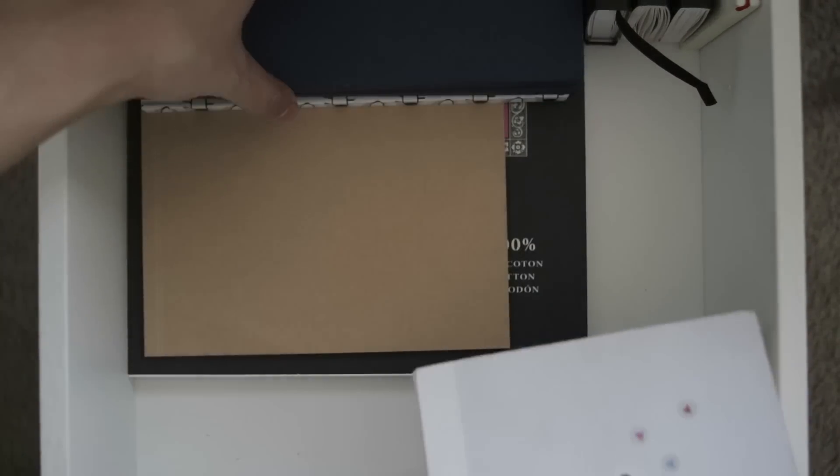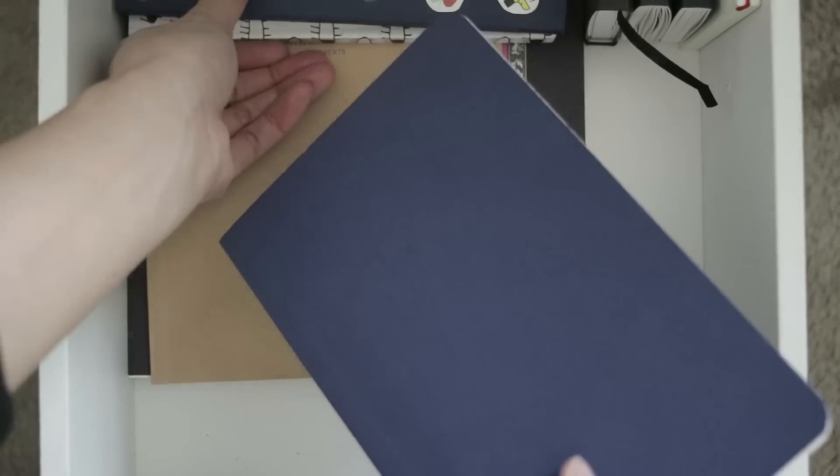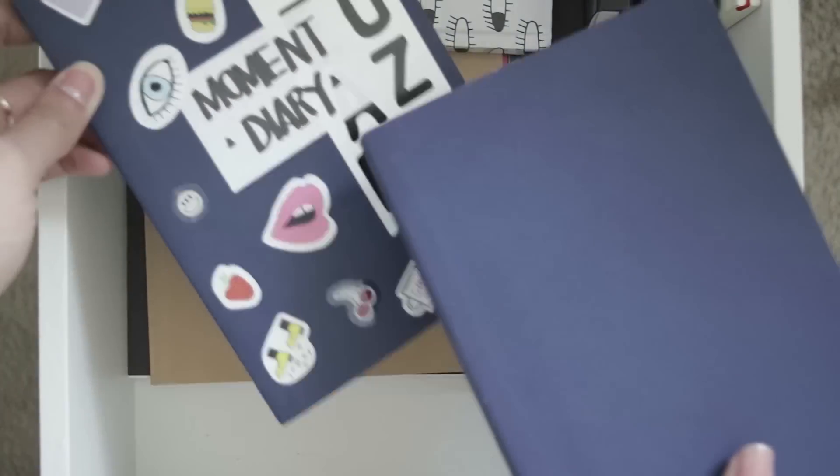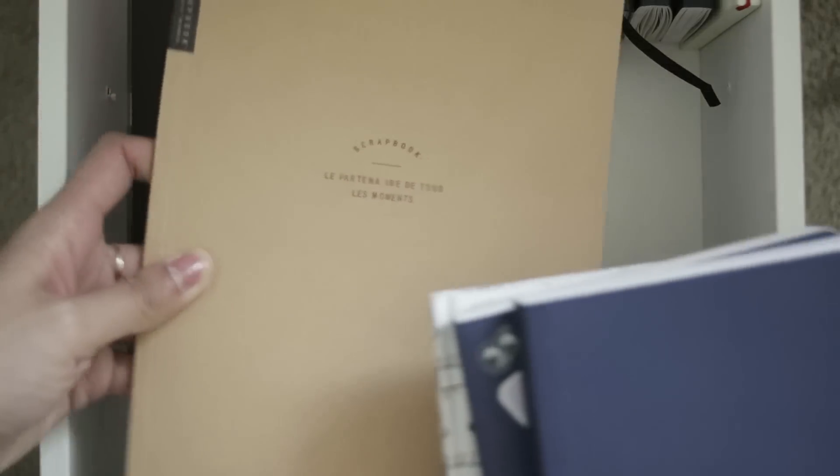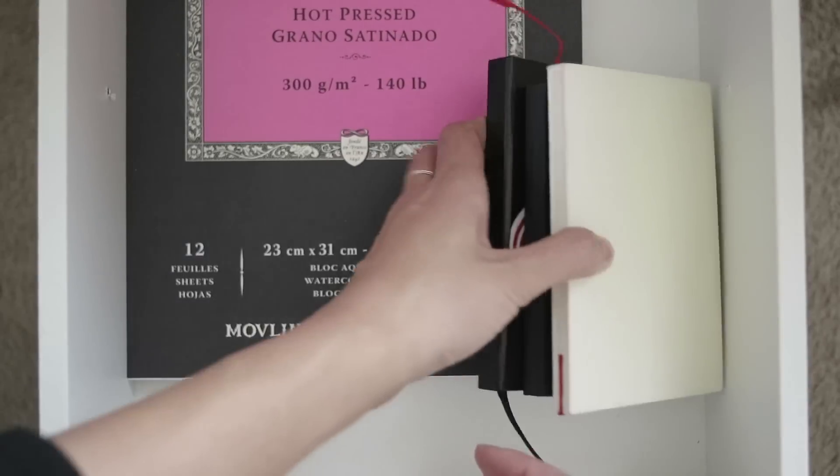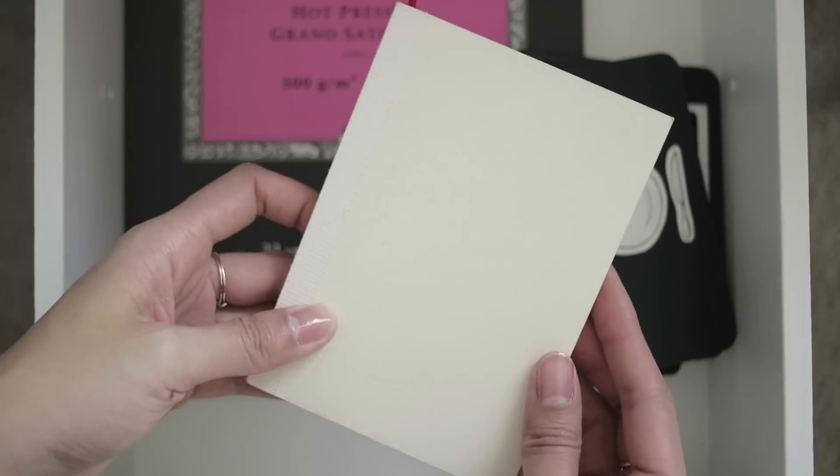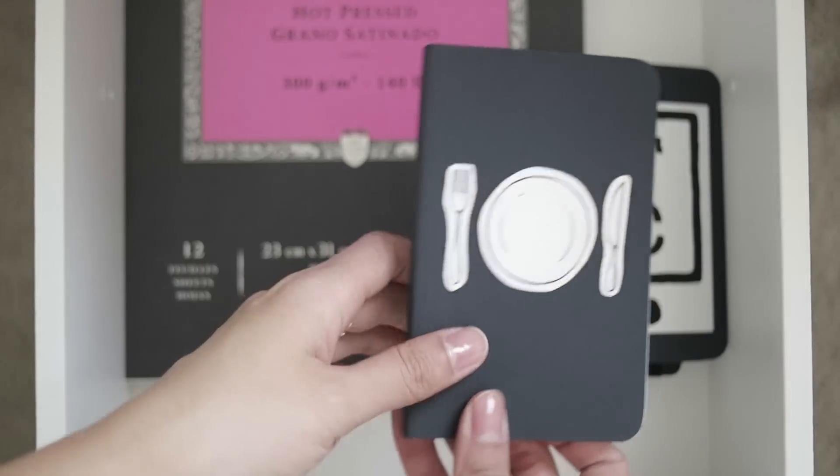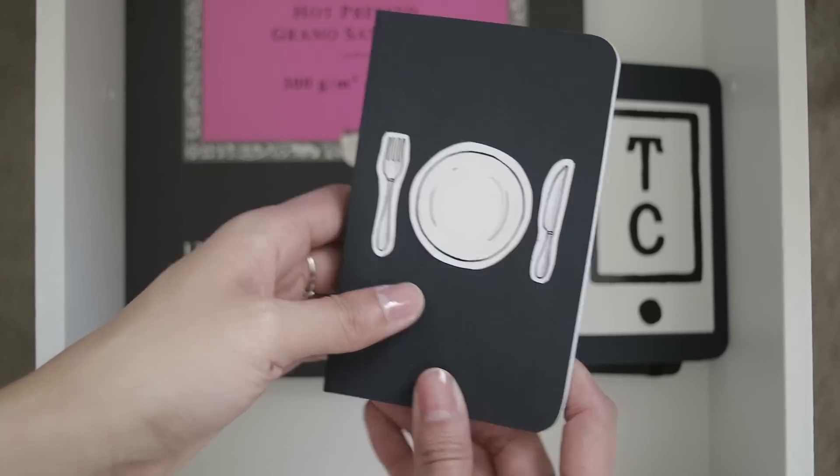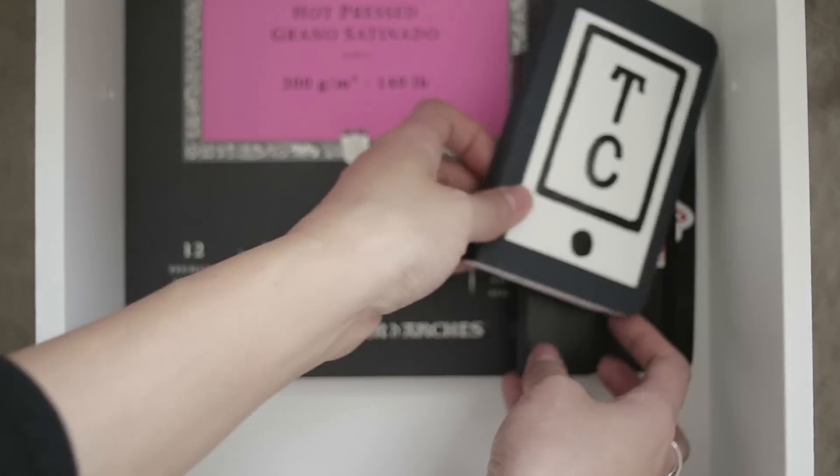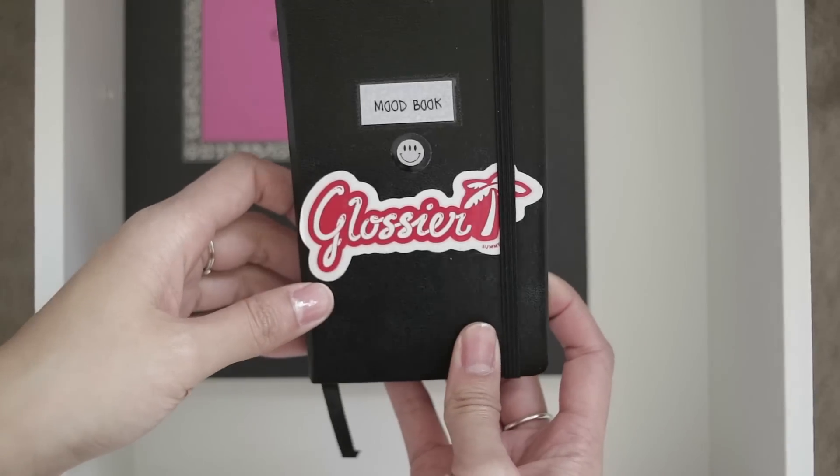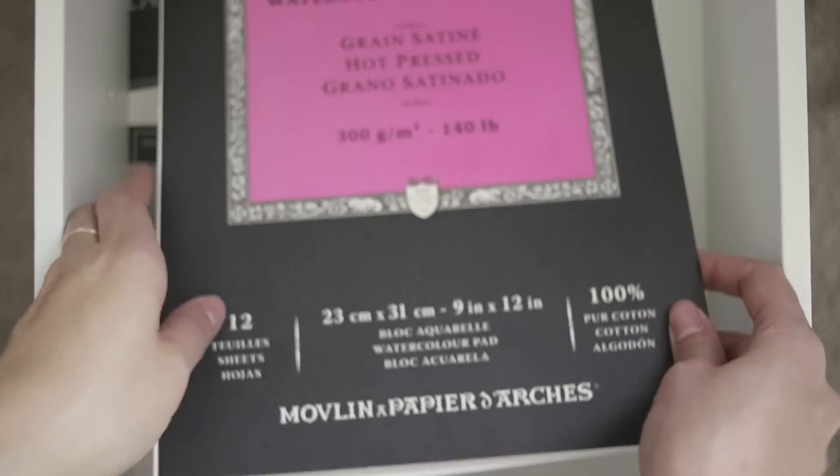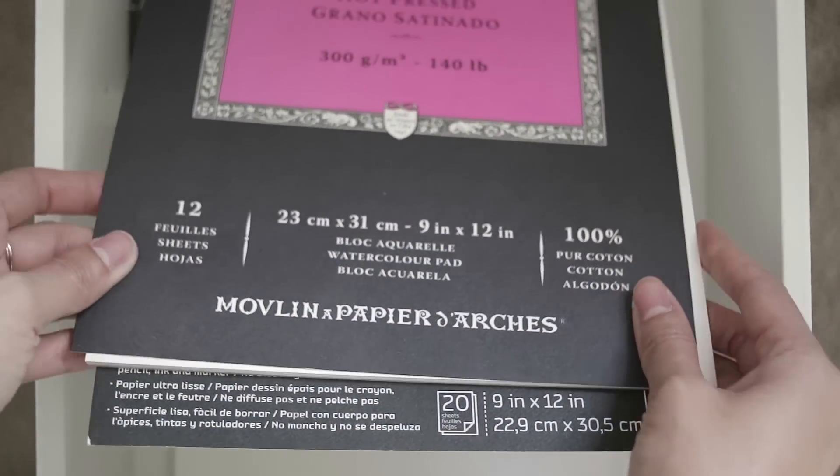And then here's all of my sketchbooks. There's a bunch. I have a bunch of Stillman & Byrne sketchbooks. I have some notebooks that were gifted to me. These right here, I haven't completed, but these are the ones that I use from time to time. This is my Slice & Doodles sketchbook. Another Stillman & Byrne. And then this one is the Leuchtturm sketchbook.